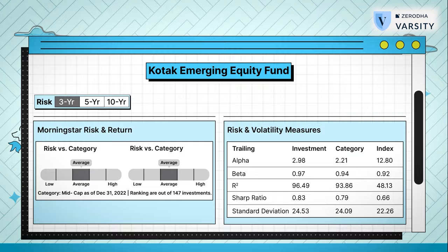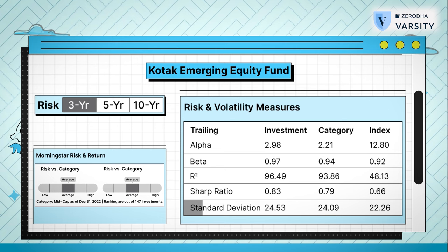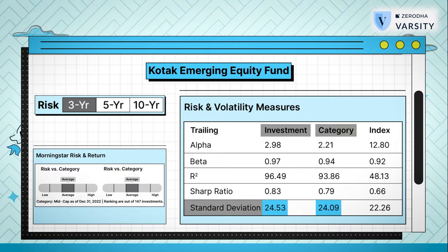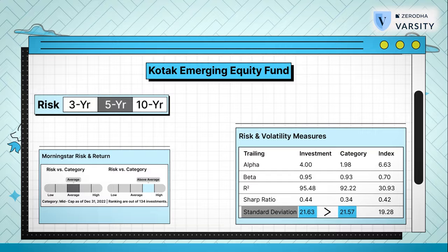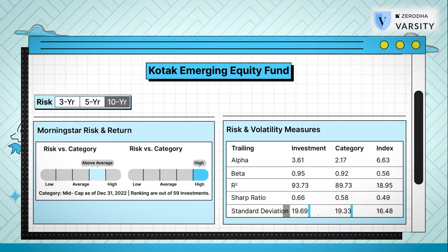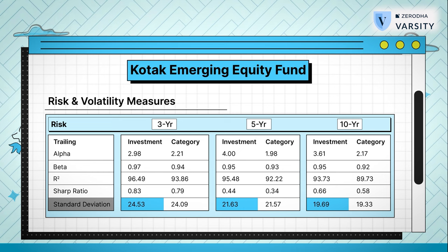Moving ahead, I would like to look at a few other metrics mentioned either in the fact sheet or on third-party websites like Morningstar. Have a look at the risk and volatility measures of this fund. On a three-year basis, the fund's standard deviation is 24.53%. Standard deviation is a measure of risk — higher the standard deviation, more risky is the fund. This particular fund's standard deviation is higher compared to the category's average of 24.09%. We also need to check how the standard deviation performs on five- and ten-year basis. On the five-year basis, the fund's standard deviation is comparable with the category average, although slightly higher. Again on the 10-year basis, the fund's standard deviation is slightly higher. On all three time frames — three, five, and ten years — the standard deviation of the fund is slightly higher than the category itself.